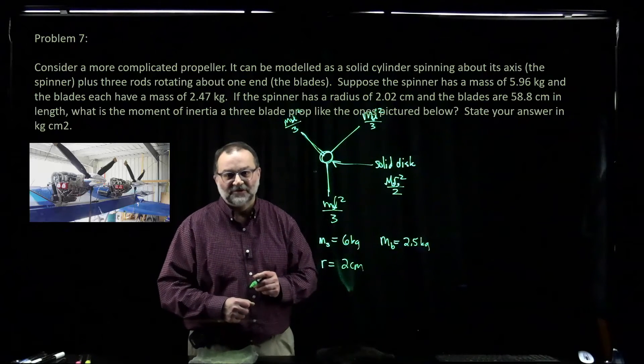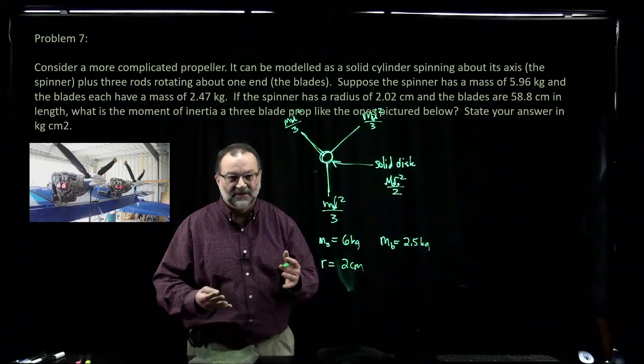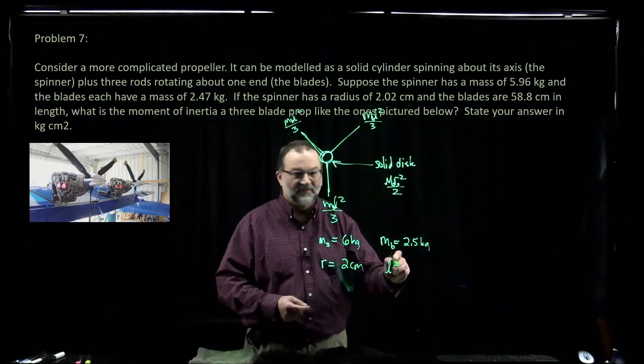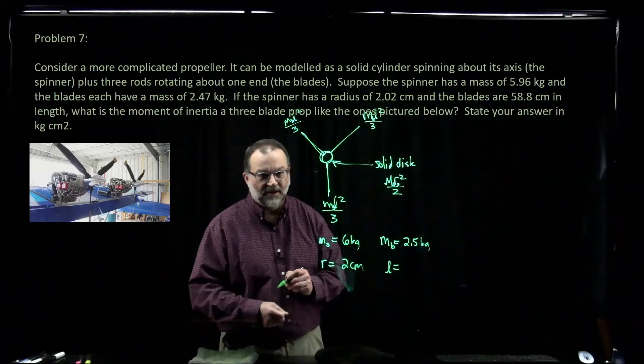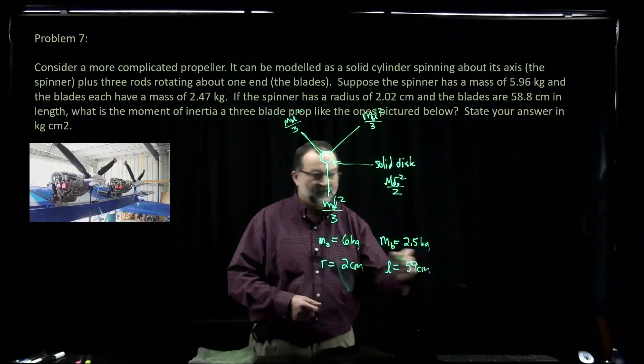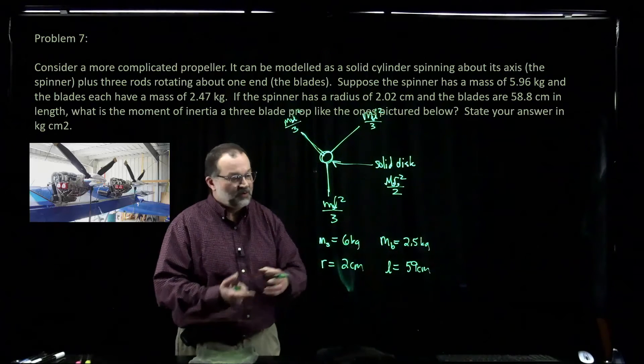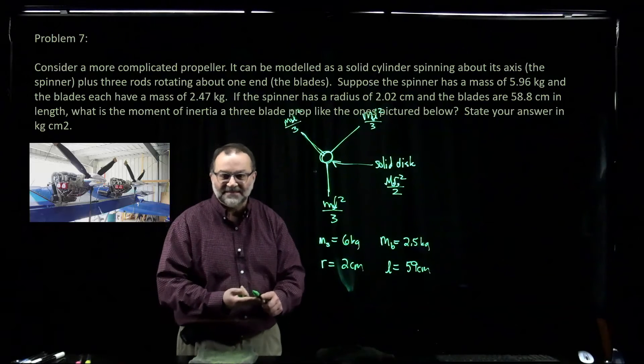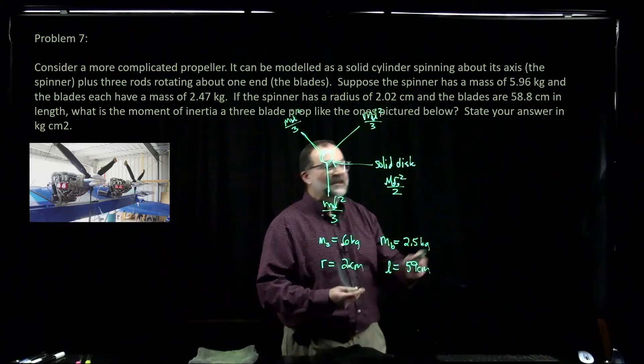The moment of inertia of the three blades prop. The blades, the length of the blades are 59 centimeters. So we've got the masses, we've got the lengths. All we have to do is put it all together.